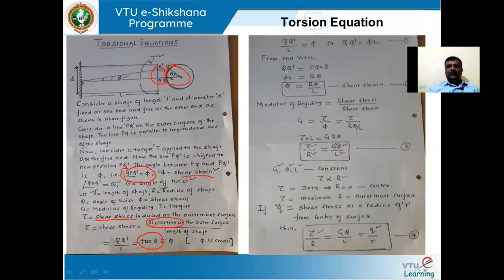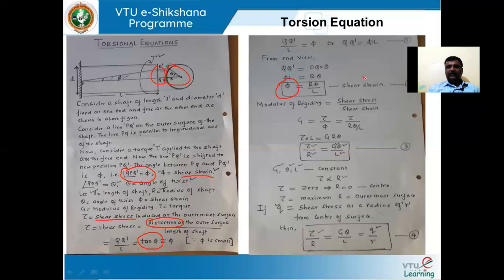From the end view, Q Q dash equals OQ into theta, since Q Q dash is the arc length given by radius times angle subtended. Substituting, phi L equals R theta, or phi equals R theta by L. So the shear strain is represented by the radius times angle of twist divided by the length of the shaft.